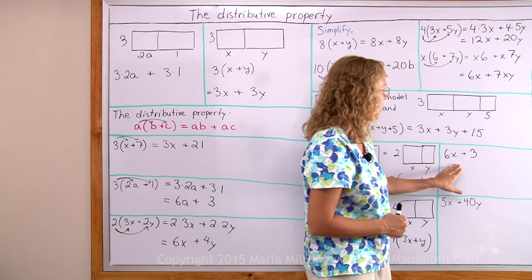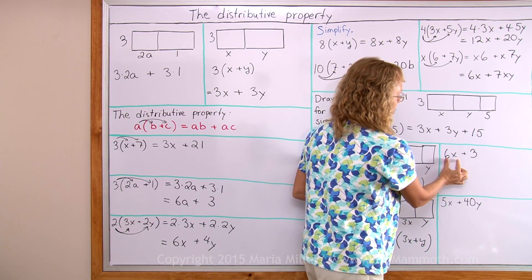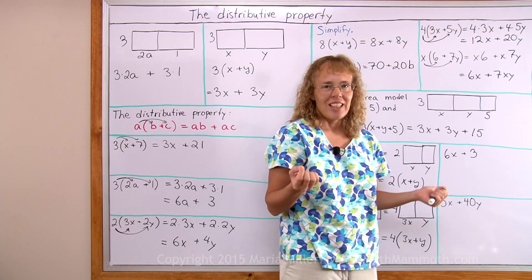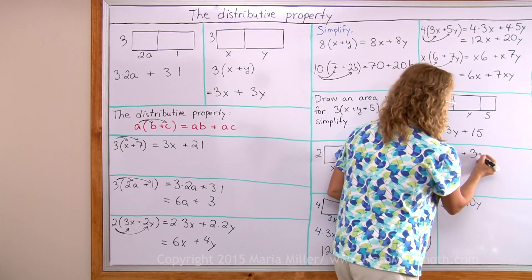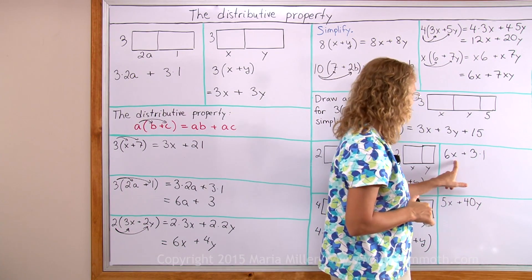Let's do the same here without drawing an area model. But I have to think in my mind that this would be an area of some rectangle and this alone would be the area of some rectangle. 3, well, you see I can write it as 3 times 1. So it is actually a multiplication.